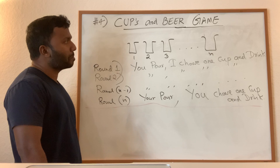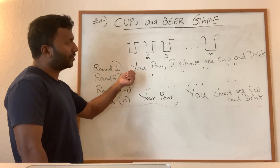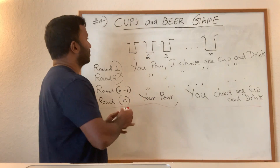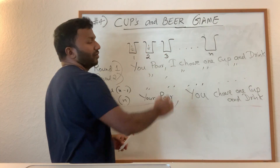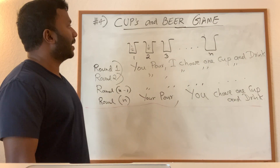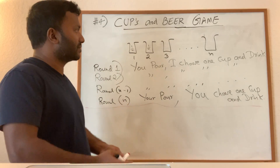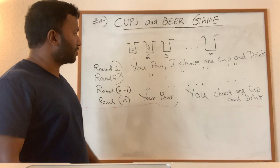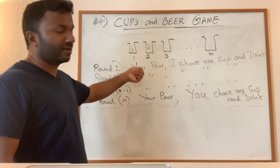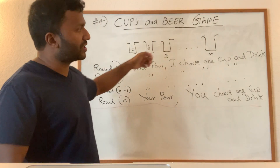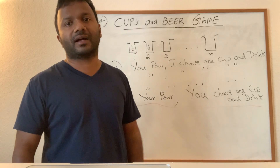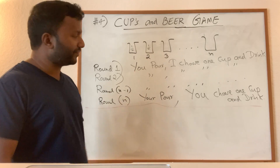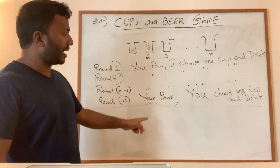What about another strategy? In the first round, you pour equal amounts into all N buckets — so 1/N to each. When I come to drink, everything looks the same, so I just pick one. In the second round, you again pour the one liter equally across the N buckets so all amounts are equal. I come back, see it's all the same, pick one, and so on.